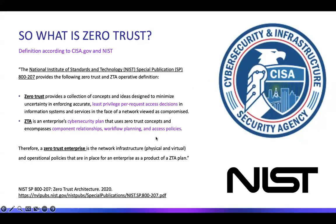What is zero trust? There are actually definitions out there. NIST has a publication, 800-207, that gives the definition of zero trust as a collection of concepts and ideas designed to minimize uncertainty in enforcing accurate least-privilege per-request access decisions in information systems and services in the face of a network viewed as compromised. We are supposed to always assume our networks are compromised.